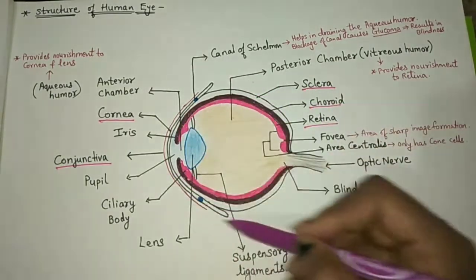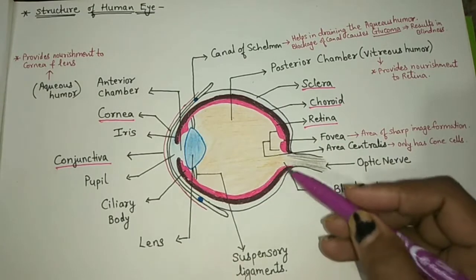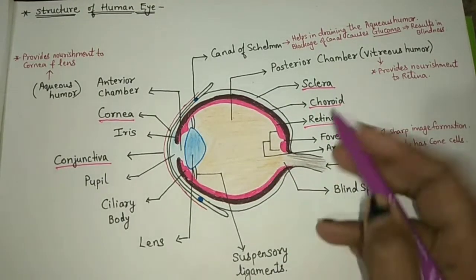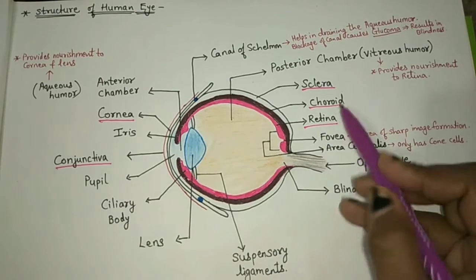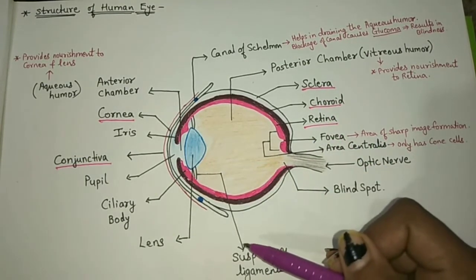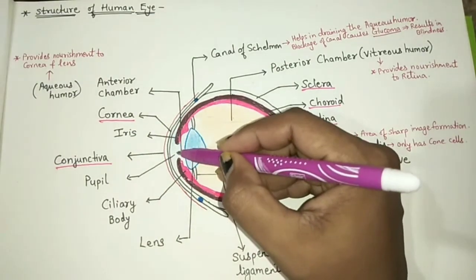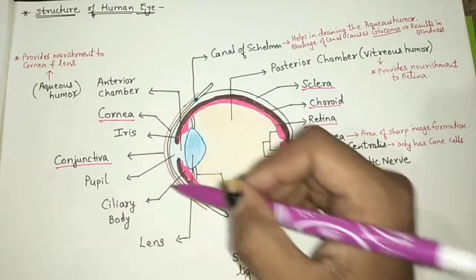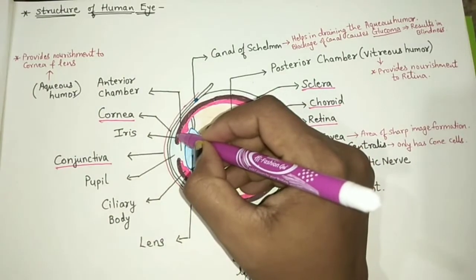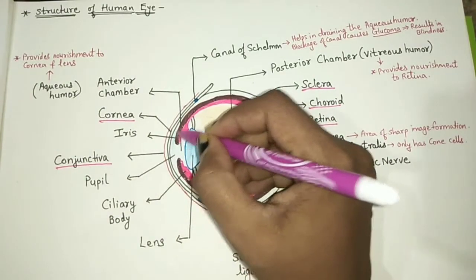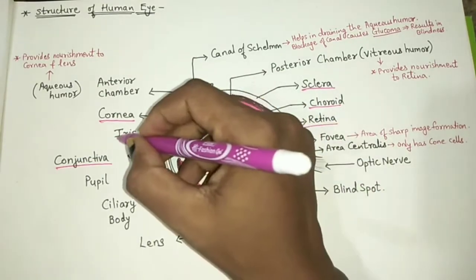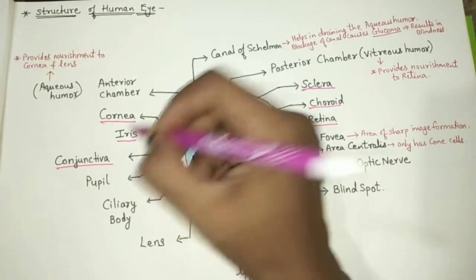The sclera is a complete layer — it covers the whole eyeball — whereas the choroid and retina are incomplete layers because they are incomplete from the front or anterior side. At the anterior side, there are muscular structures called the iris and the ciliary body.